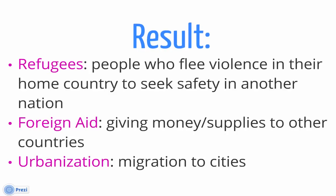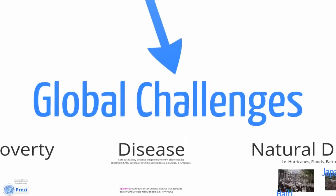When people have had a traumatic event occur, some choose to move in search of better opportunities. Refugees come from natural disasters or violence — people who flee violence in their home country to seek safety in other nations. Foreign aid comes into play because other countries might help a country rebuild, giving money and supplies. Urbanization will also rise as a key social challenge, as people migrate to cities for jobs rather than staying in rural areas.